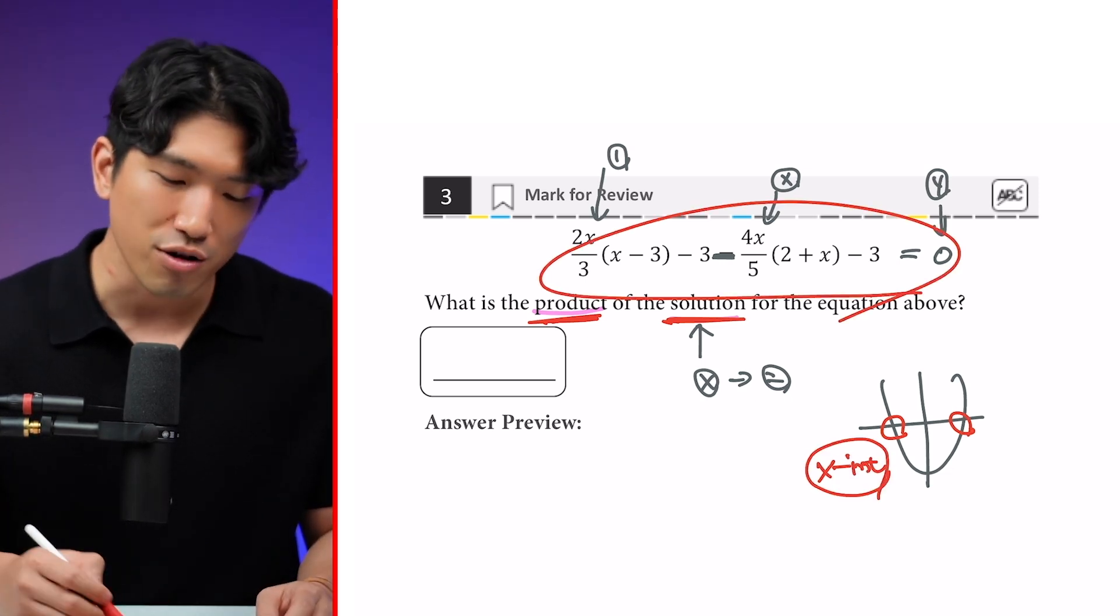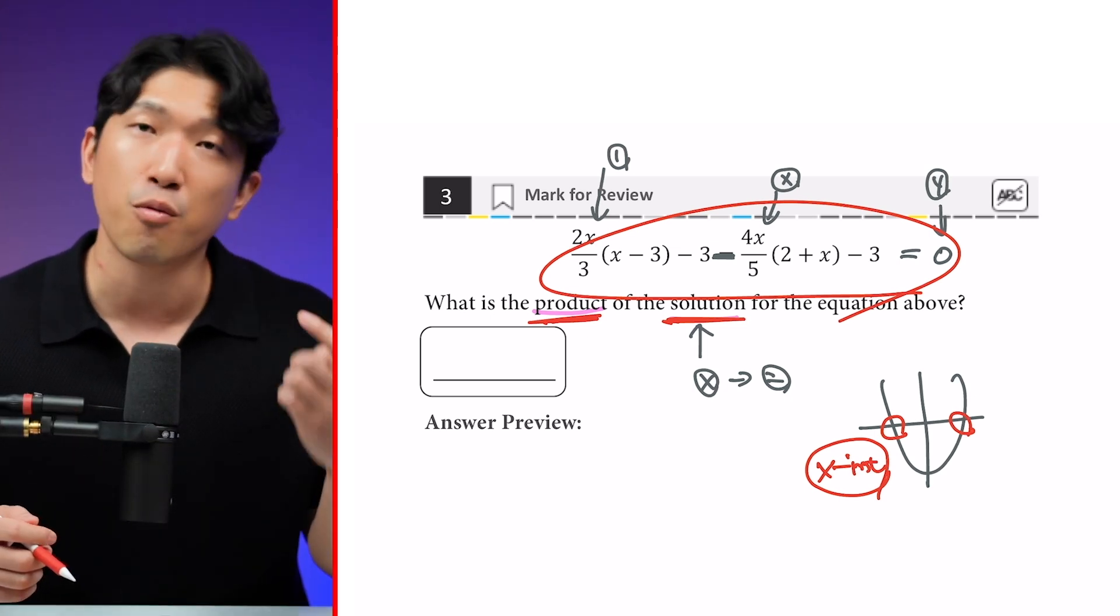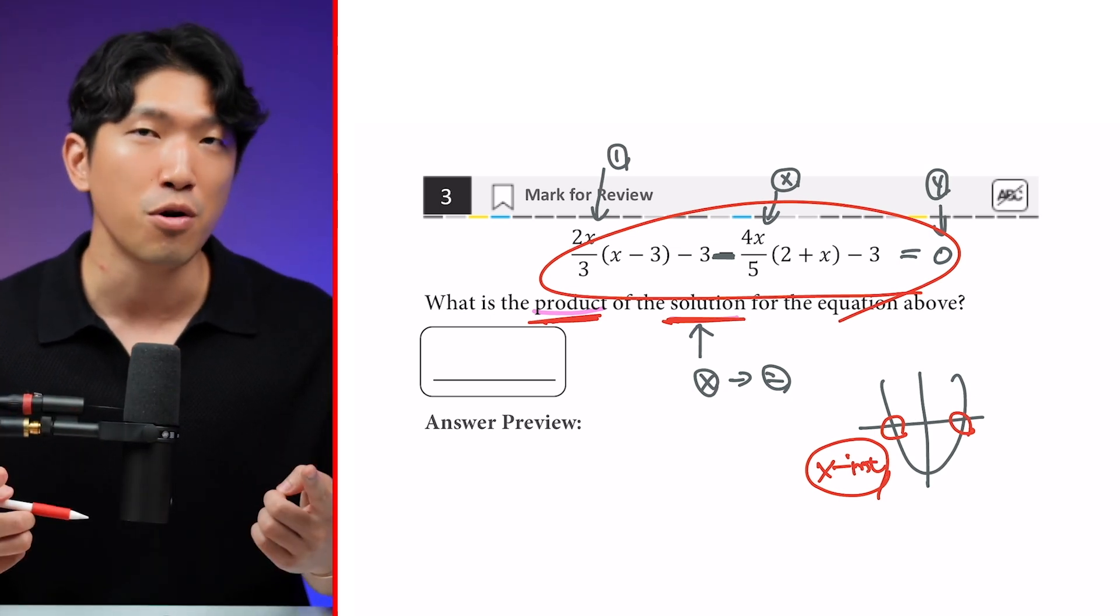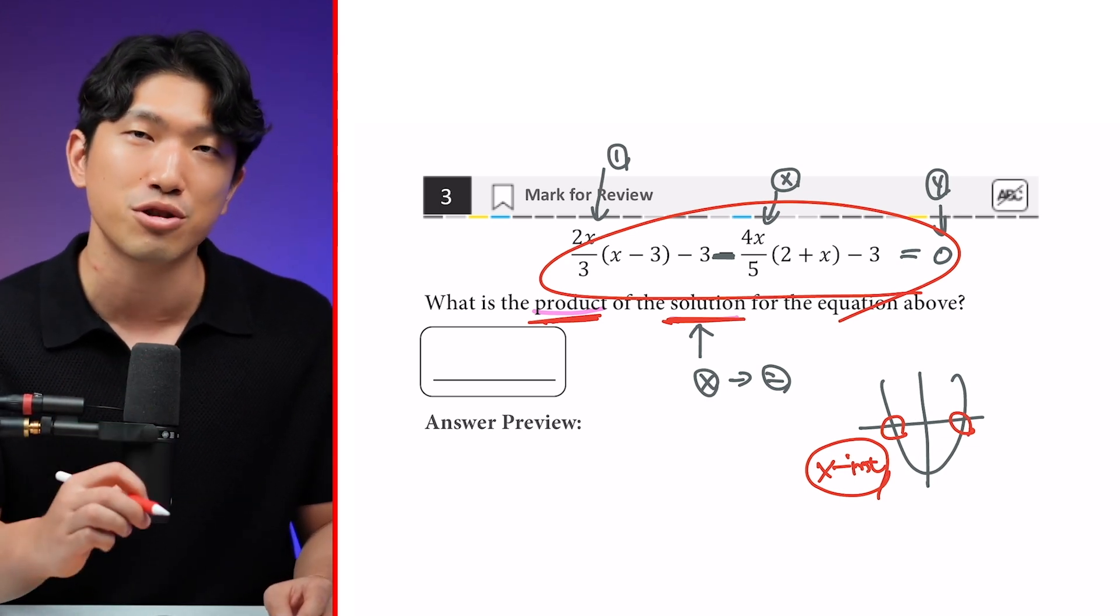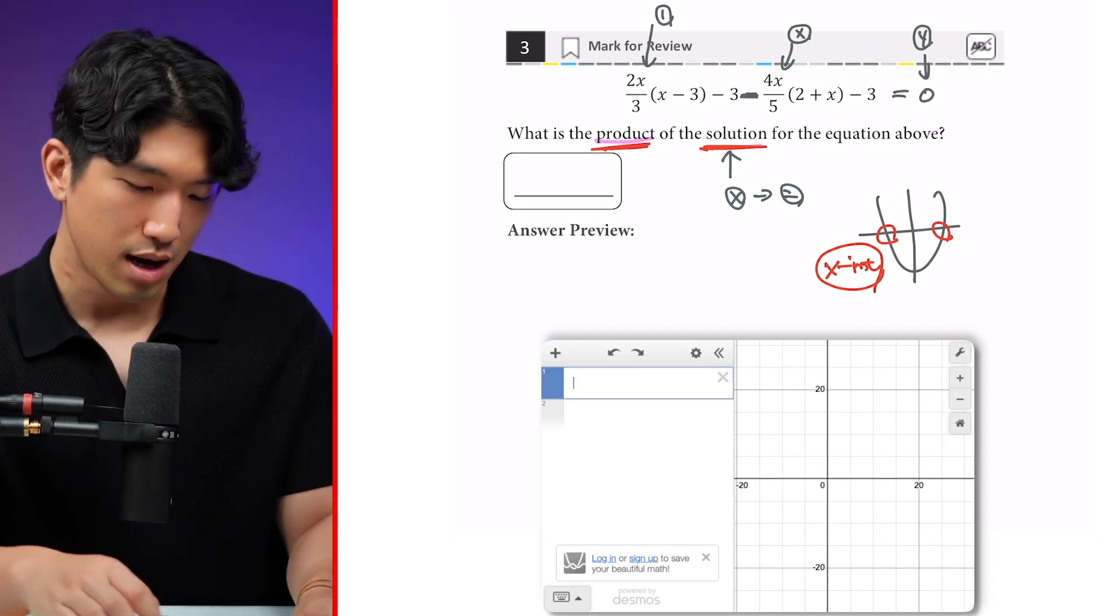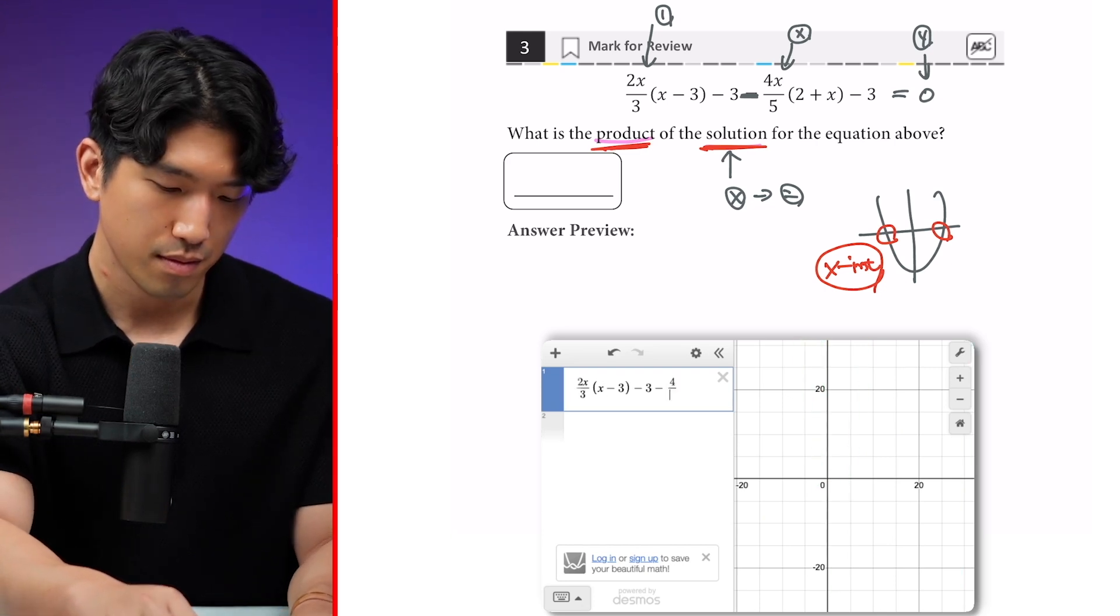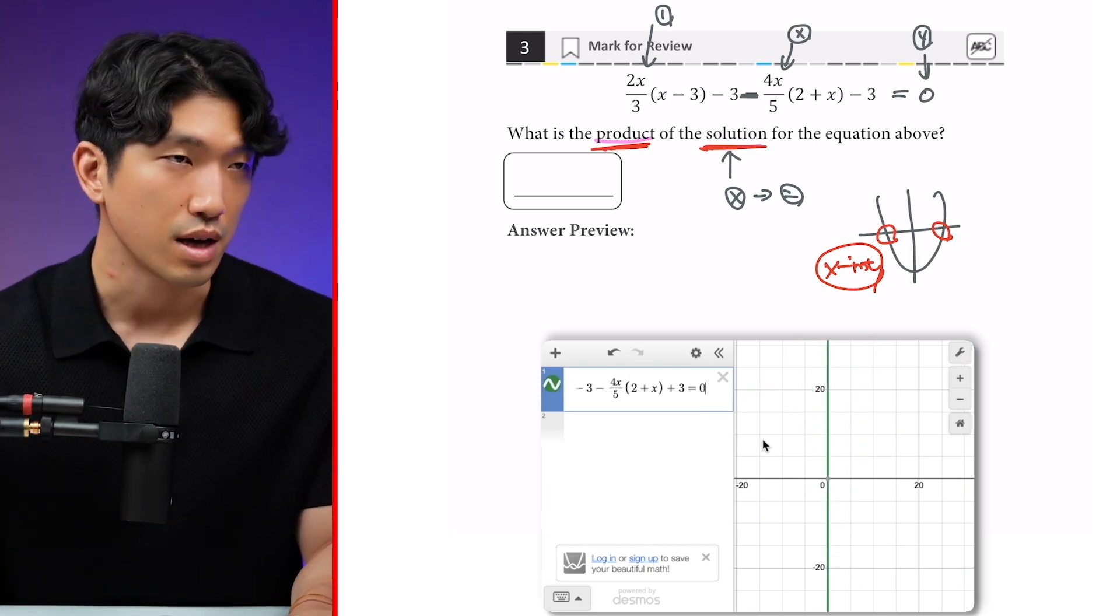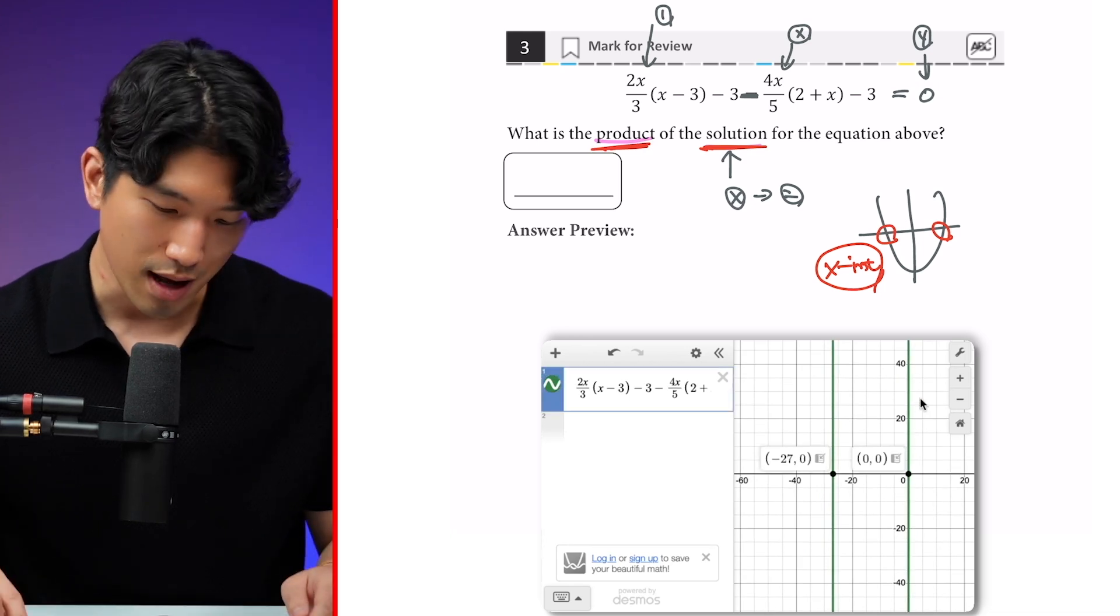And to find them, we can either expand all this out, combine it and try to factor it. Or because we have one equation and one unknown variable, we can simply pop it into Desmos, graph it out and go to the x-intercepts directly. So let's graph this out on Desmos. And if I plug it in, I'm going to get 2x/3(x - 3). I'm going to see that my x-intercepts are going to be located at -27 and zero.